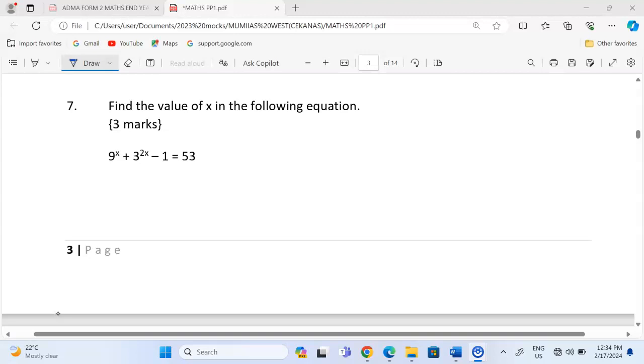9 power x plus 3 power 2x minus 1 equals to 53. So the first thing to do is to express all the terms or all the numbers in the simplest base according to this equation. And the simplest base is going to be 3.